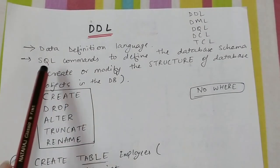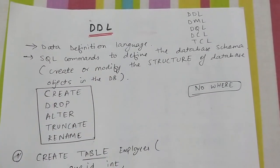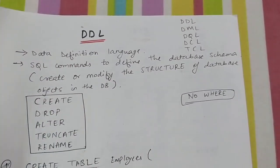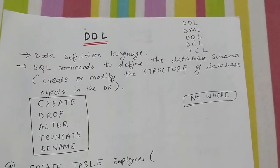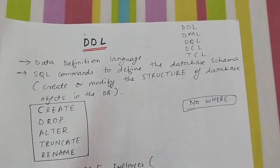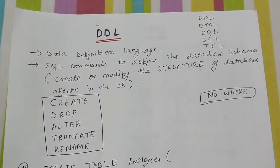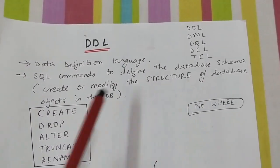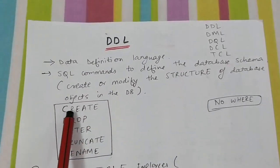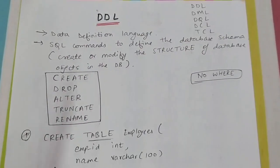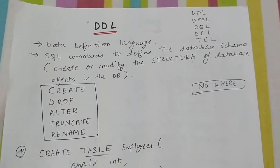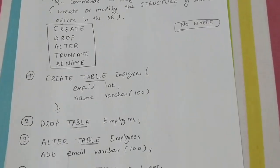Data Definition Language (DDL) commands are used to define the database schema — that is, to create or modify the structure of database objects such as tables and views. There are five DDL commands: CREATE, DROP, ALTER, TRUNCATE, and RENAME.